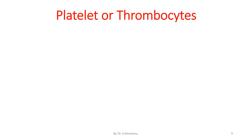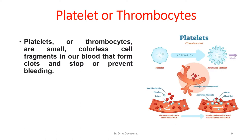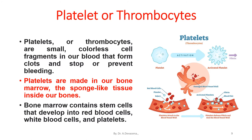Platelets or thrombocytes are small colorless cell fragments in our blood that form clots and stop or prevent bleeding. Here is a representation of the platelets, and the activation of the platelet process is shown here. Platelets are made in our bone marrow, a sponge-like tissue inside our bones. Bone marrow contains stem cells that develop into red blood cells, white blood cells, and platelets.